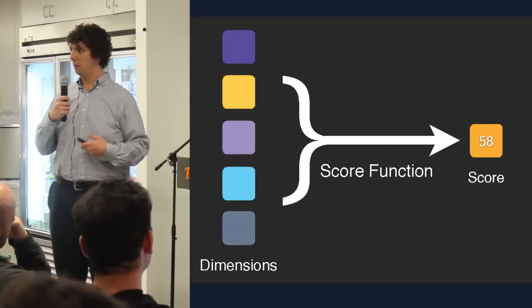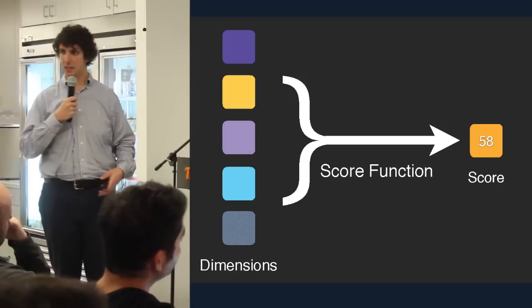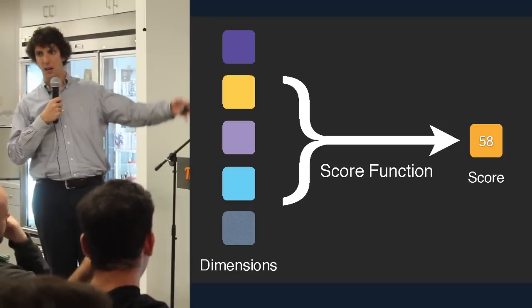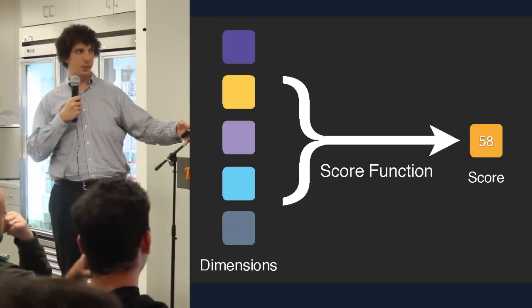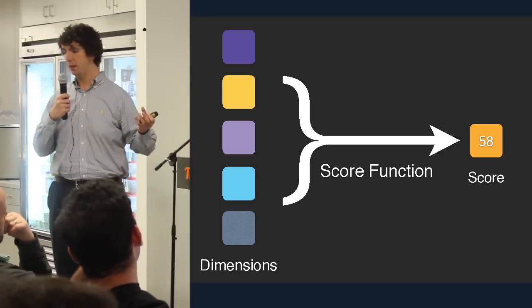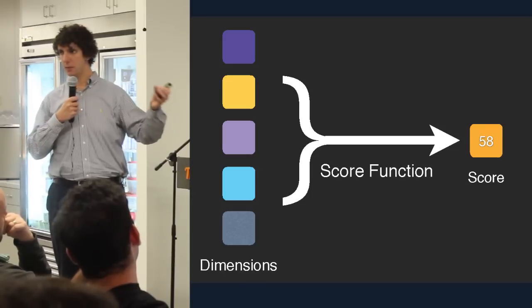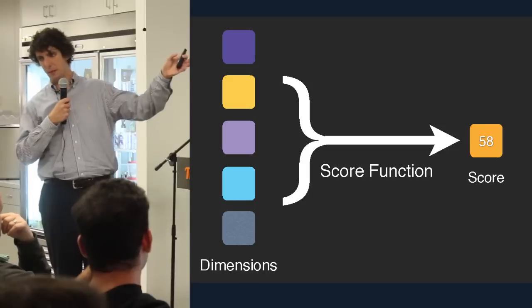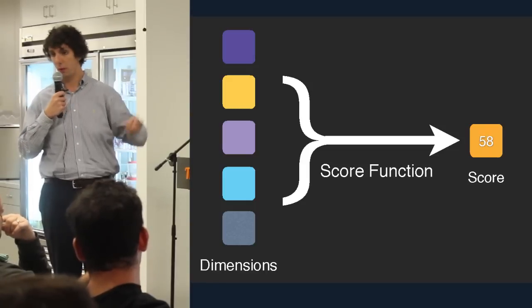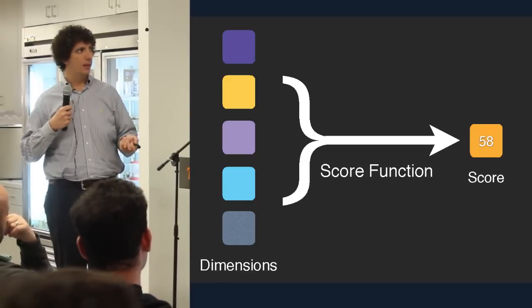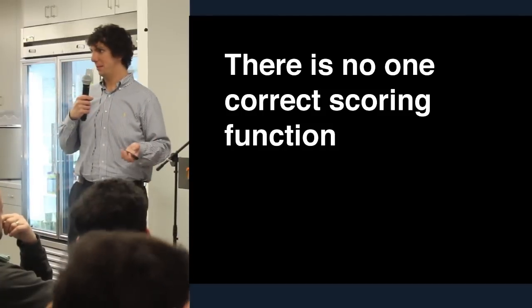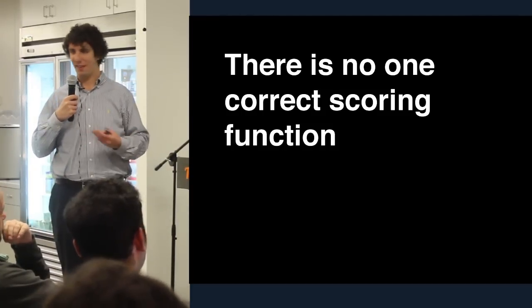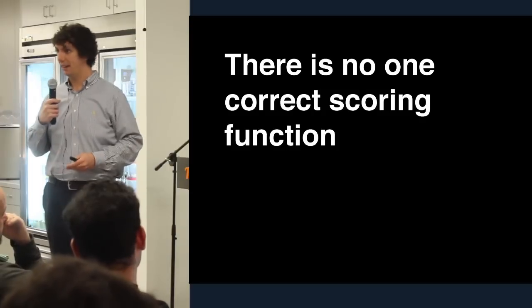Another way of looking at it, more machine learning centric, is as a dimensionality reduction. We're taking a set of numeric attributes along dimensions and compressing them using a scoring function into a single numeric value. This is a five-dimensional example that gets compressed into a 58 score. Those just seem like arbitrary values — who came up with those? And in fact, I think you are entirely correct to say that.